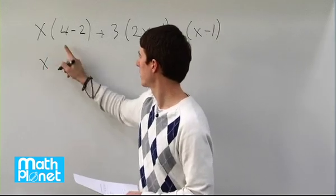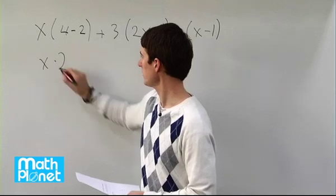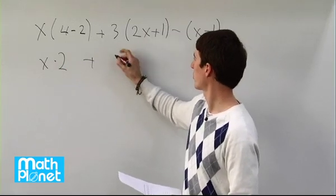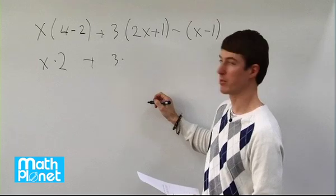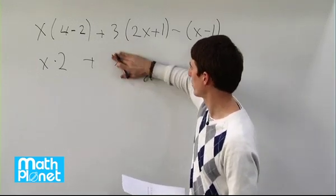So let's do that. That x, this simplifies to 2, 4 minus 2 is just 2, so x times 2, plus 3 times 2x plus 1 can't be simplified any, so we have to distribute directly the 3 times the 2. So let's do that now.